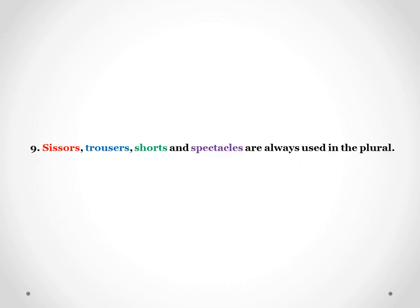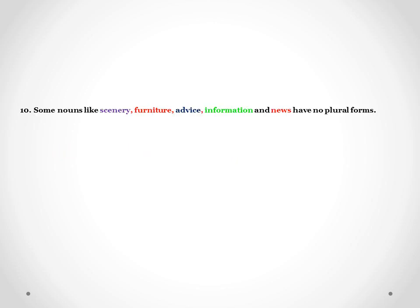Scissors, trousers, shorts and spectacles are always used in plural form — you don't have any singular form for them. Even if there is one pair of scissors, it is called scissors only. Some nouns like scenery, furniture, advice, information and news have no plural forms. That's all for today. Have a good day.